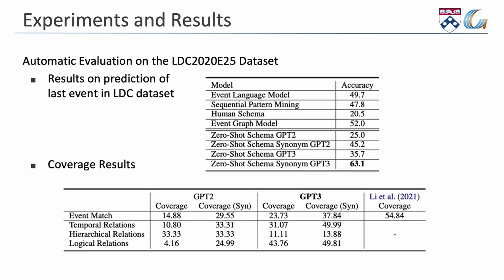To evaluate our schema generation process, we conducted a comparison with existing supervised methods that rely on manually collected texts and unsupervised methods that use our pipeline with various language models such as GPT-2 and GPT-J for generating the texts. The results show that the GPT-3 pipeline model outperforms the other unsupervised models in the tasks of event coverage and prediction of last event.